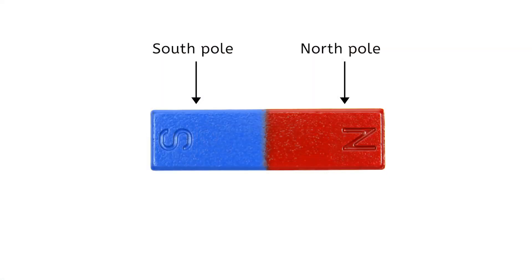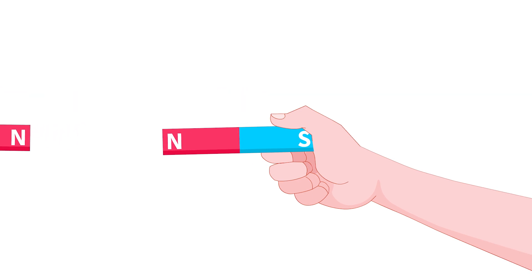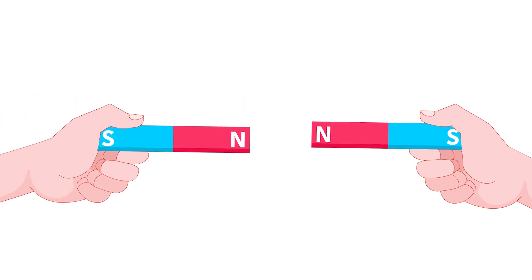A bar magnet has two distinct ends called poles. An essential property of these poles is that like poles repel each other, while opposite poles attract. So if you bring the north pole of one magnet close to the north pole of another, they'll push each other away.